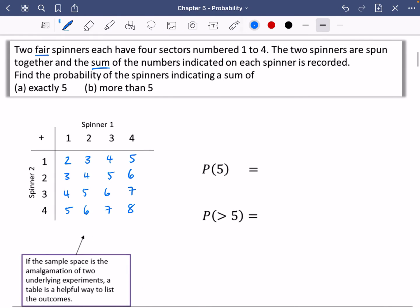The question says what is the probability that the spinners indicate a sum of exactly five? Well, exactly five, there are four of them. There are four outcomes that will give you exactly five. In total there are 16 different outcomes from this experiment. So you get four out of 16, which of course we can simplify to a quarter.